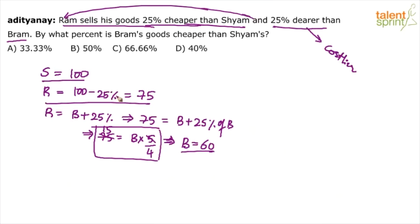Because 75 is the value for Ram, which is 25% dearer, so it is 125% of Bram, and 125% is 5/4 × B. That is how you save time, otherwise everything would look lengthy.